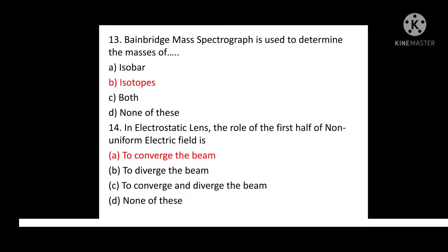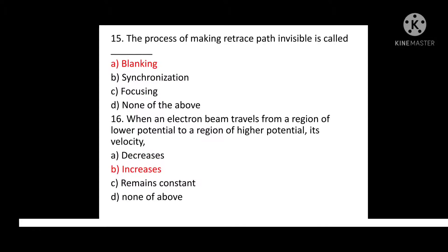Question No. 14: In electrostatic lens, the role of the forward half of non-uniform electric field is? Option A: To converge the beam. Option B: To diverge the beam. Option C: To converge and diverge the beam. Option D: None of these. Correct answer is Option A: To converge the beam.